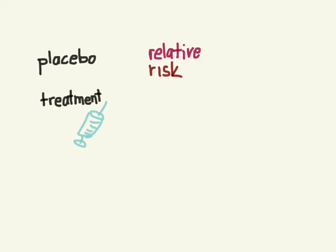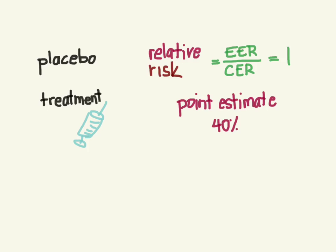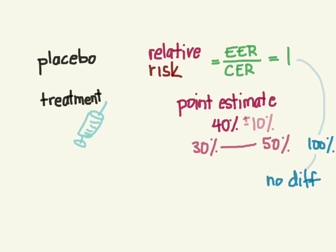Now let's look at relative risk, which is the experimental event rate over the control event rate. The point of no difference here is when both rates are equal, meaning a relative risk of 1 — or 100%. If our point estimate is 40% with a 95% confidence interval of plus or minus 10%, the interval spans 30% to 50%, which does not cross our no-difference point of 1. So the precision confirms we do have a real difference.